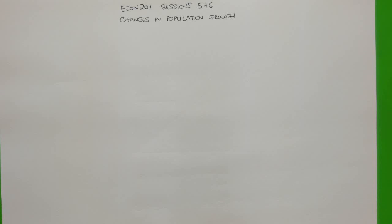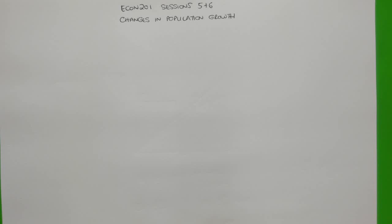Hi everyone. This particular video is covering Econ 201, sessions 5 and 6, and particularly the component which looks at how a change in the population growth rate will affect the steady state equilibrium level of output per person and the steady state output growth rate in the neoclassical growth theory model.